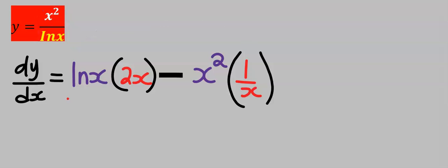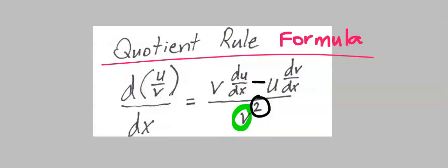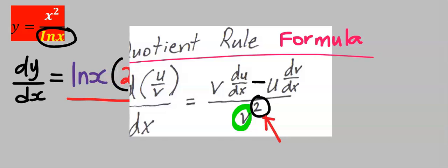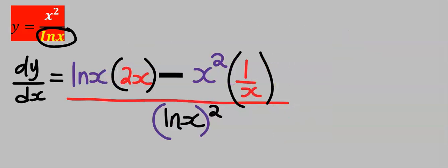Next, I'm going to draw a line across the numerator, and I'm going to bring down the value, which is the natural log of x at the denominator. According to the quotient rule formula, the denominator will be squared, hence this will be squared.